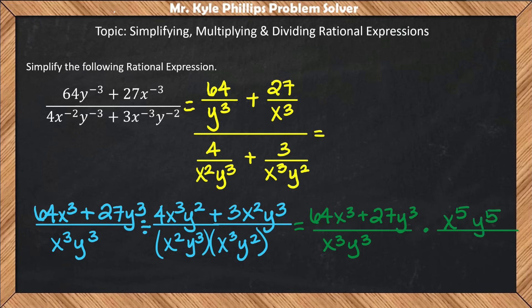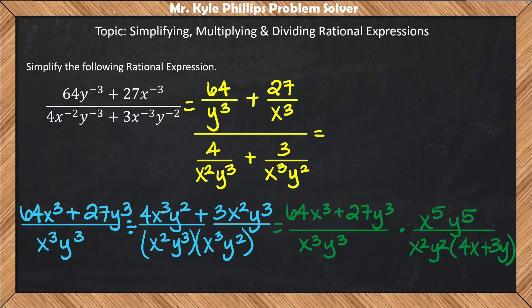If I look in the numerator and pull out the greatest common factor, that's x²y². Then I would be left with 4x plus 3y.